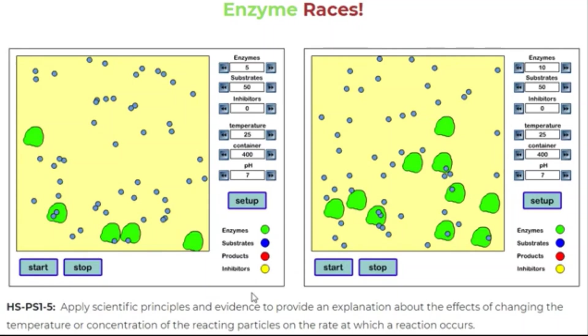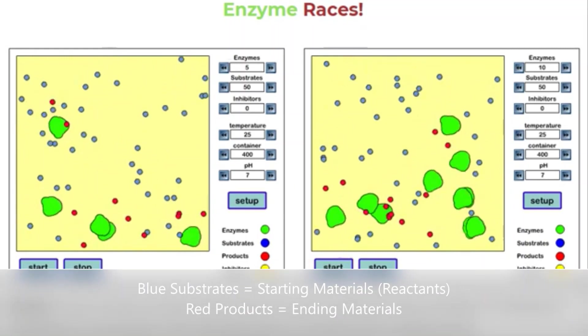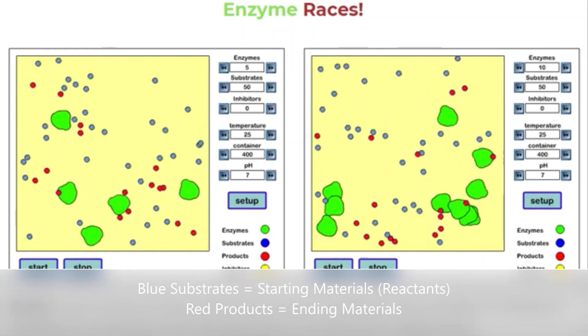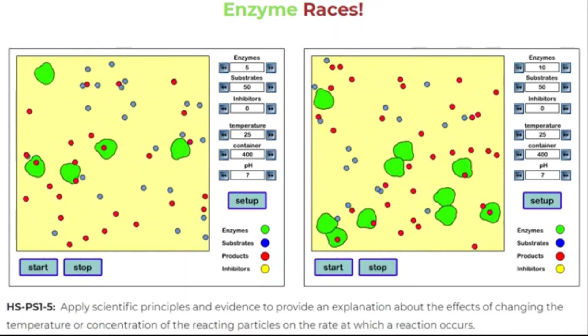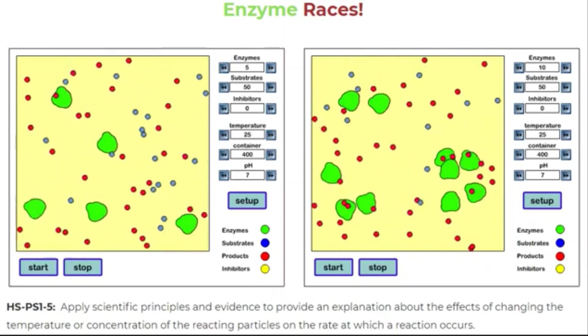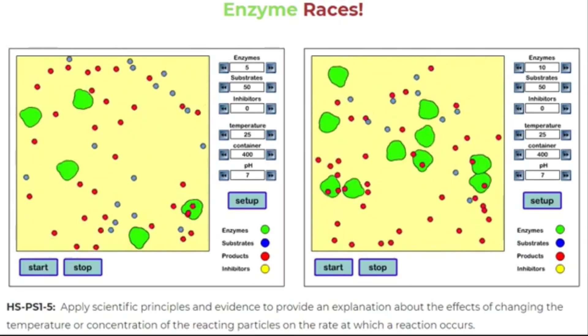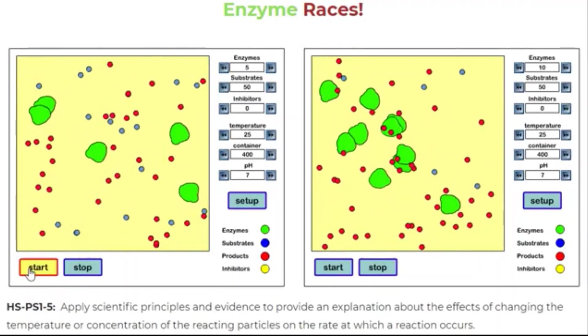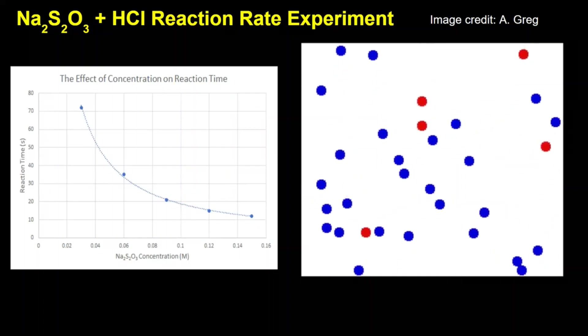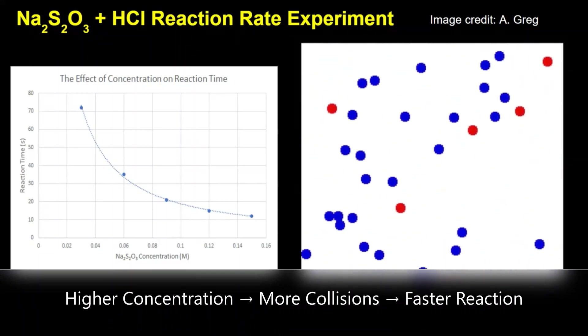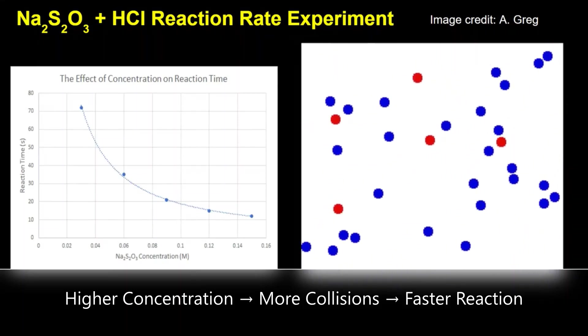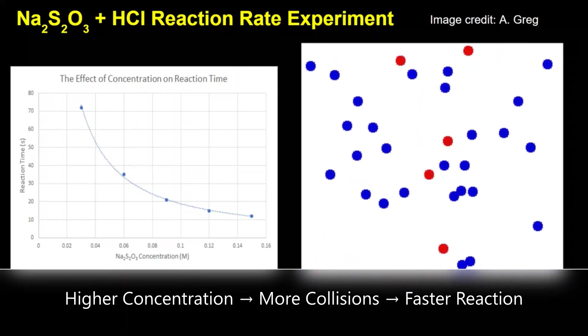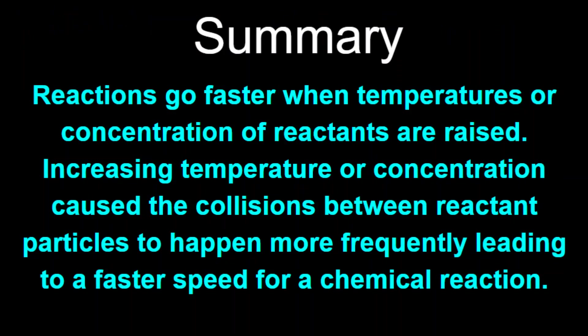In the second example, we see that the number of green enzymes is greater in the reaction window on the right. This allows for more collisions between blue substrates and the enzyme which will convert these molecules to red products. We can see that the reaction on the right converts over 90% of the blue starting materials to red end products much more quickly. The higher concentration in the right window allows for more frequent collisions which speed up the reaction process. Now we can imagine the particles of Na2S2O3 and HCl colliding with each other with higher frequency in the trials with a higher concentration of sodium thiosulfate which speeds up the chemical reaction.